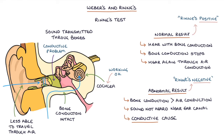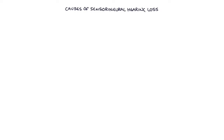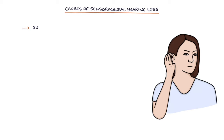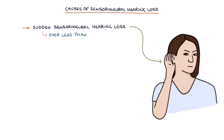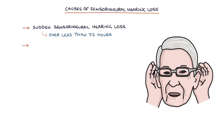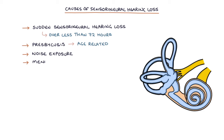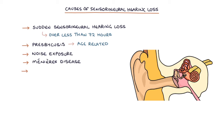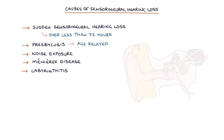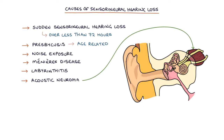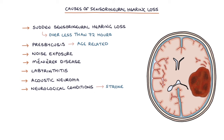Let's talk about the causes of sensorineural hearing loss. The causes of adult onset sensorineural hearing loss include: sudden sensorineural hearing loss, defined as hearing loss over less than 72 hours; presbycusis, which is age-related hearing loss; noise exposure; Meniere's disease; labyrinthitis; acoustic neuromas; neurological conditions such as stroke, multiple sclerosis or brain tumours; and infections such as meningitis.